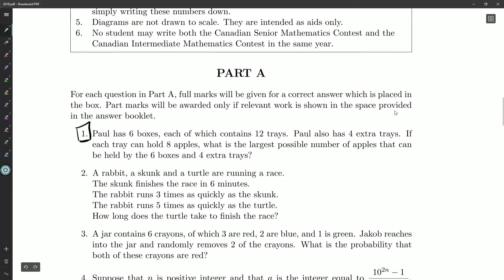Paul has six boxes, each of which contains 12 trays. Paul also has four extra trays. If each tray can hold eight apples, what is the largest number of apples that can be held by the six boxes and four extra trays?